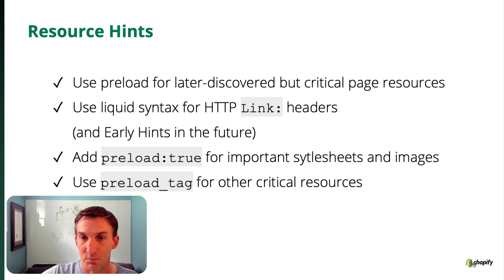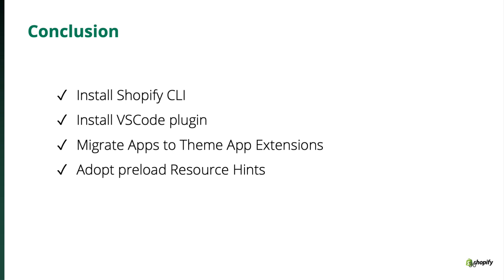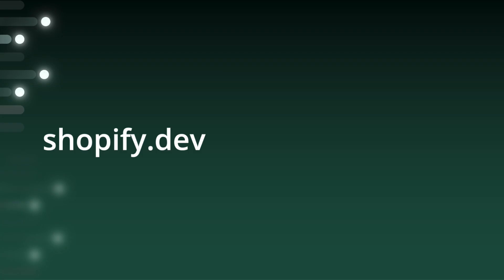In conclusion: install the Shopify CLI, install the VS Code plugin, and migrate your apps to use theme app extensions — they work on all themes, not just those that are sections and blocks aware. Adopt preload resource hints to signal the browser how to load resources faster. You can find more information about this and other things on Shopify.dev. Thank you.